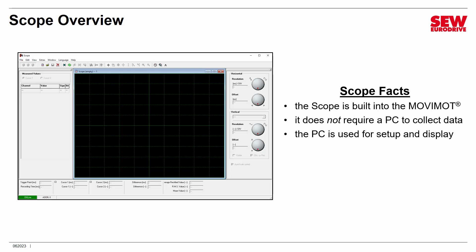The advantage of this is that the Scope doesn't require the PC to be connected to the MoviMod to collect data. The Scope can collect data whether a PC is connected or not. The PC is basically just used for setting up the Scope and then later downloading the data, displaying it, and analyzing it. You can set up the Scope using your PC, disconnect and walk away, and come back at a later date to collect the data. This is really useful when you're trying to track down an elusive fault.